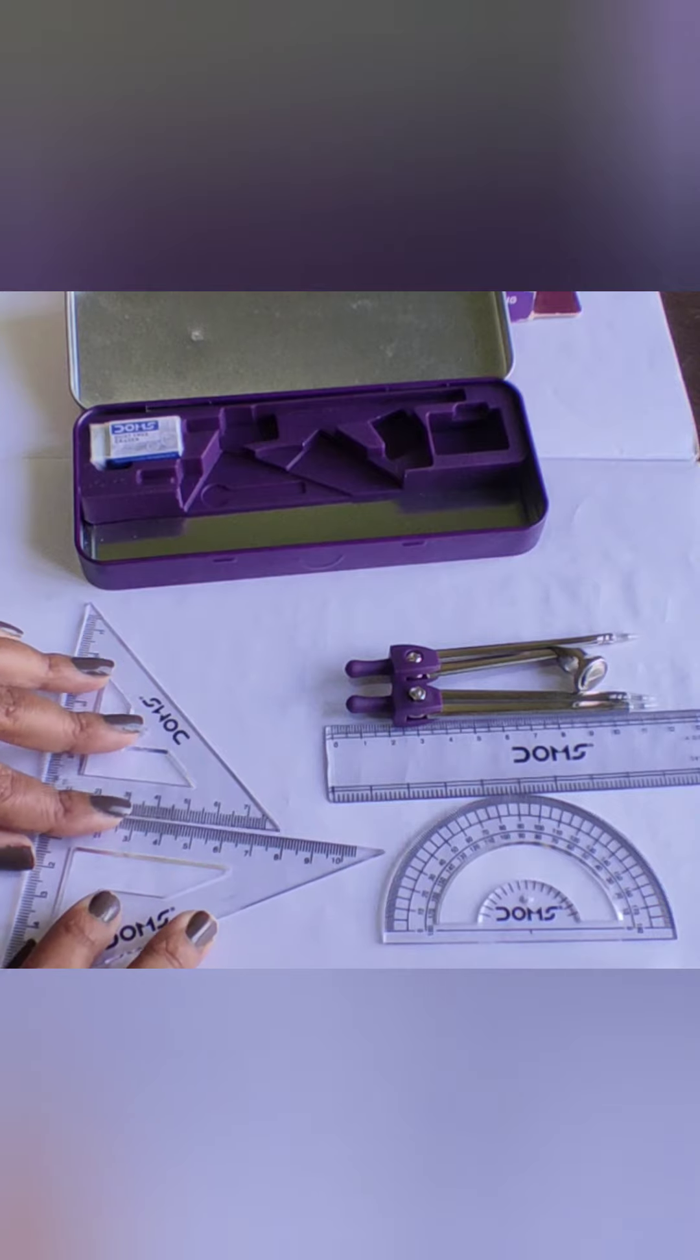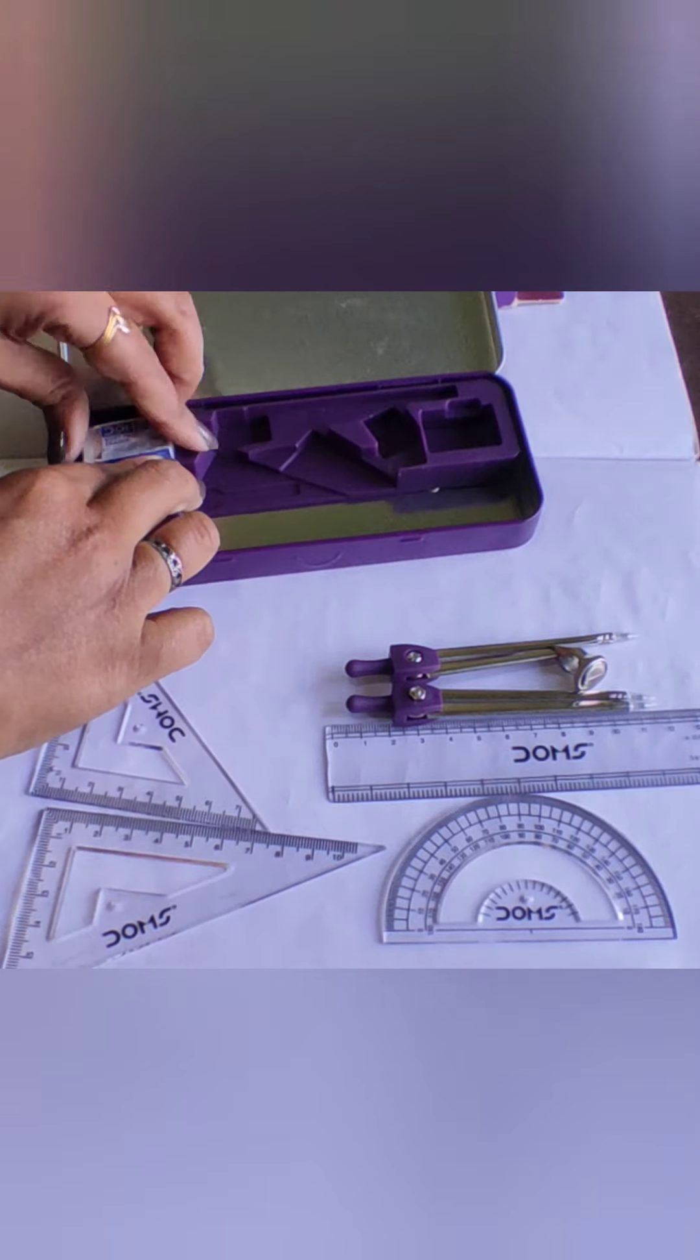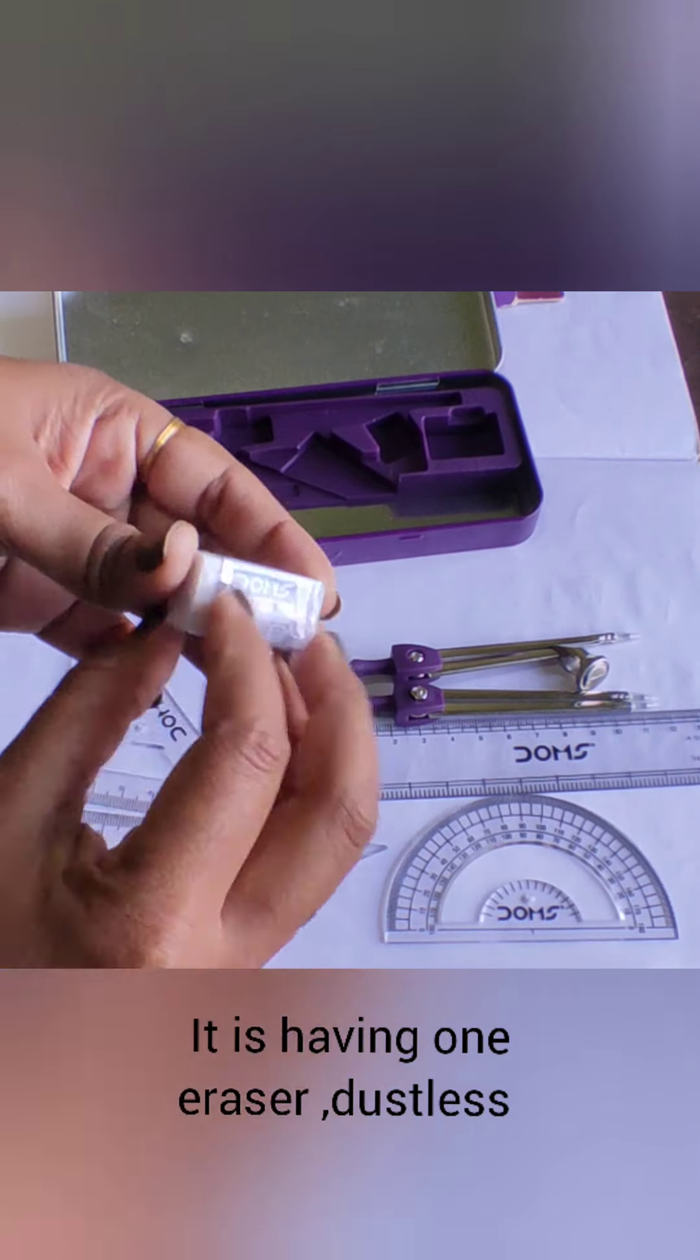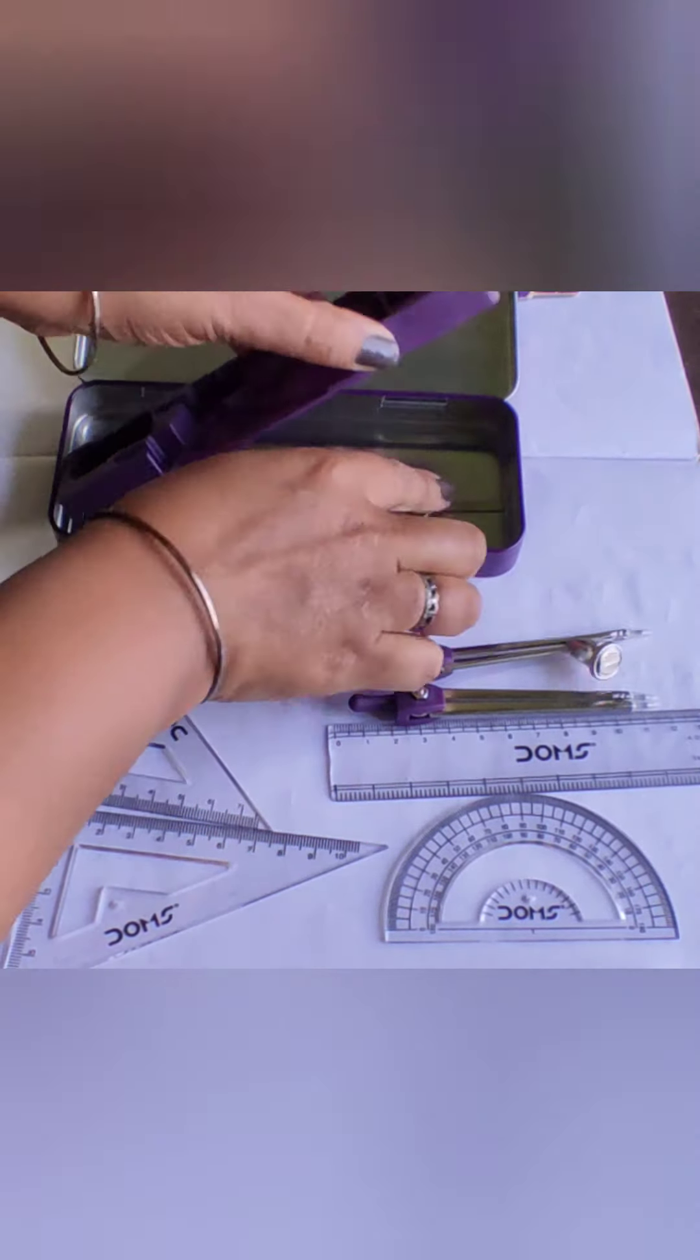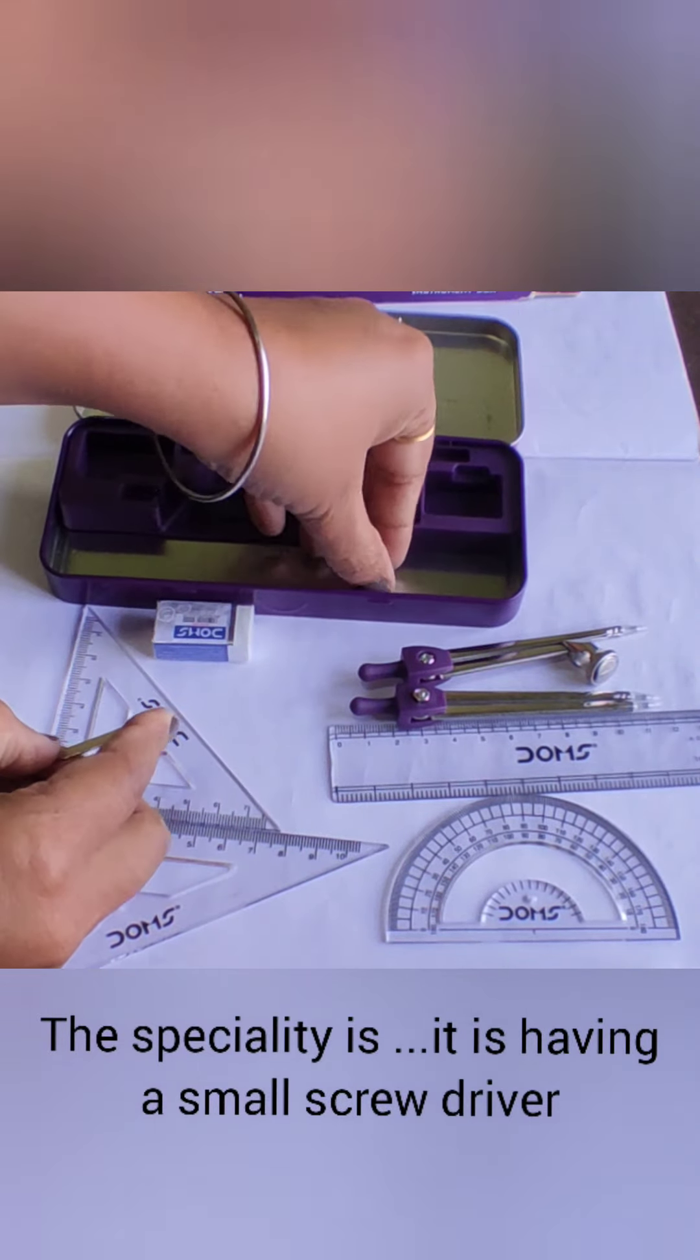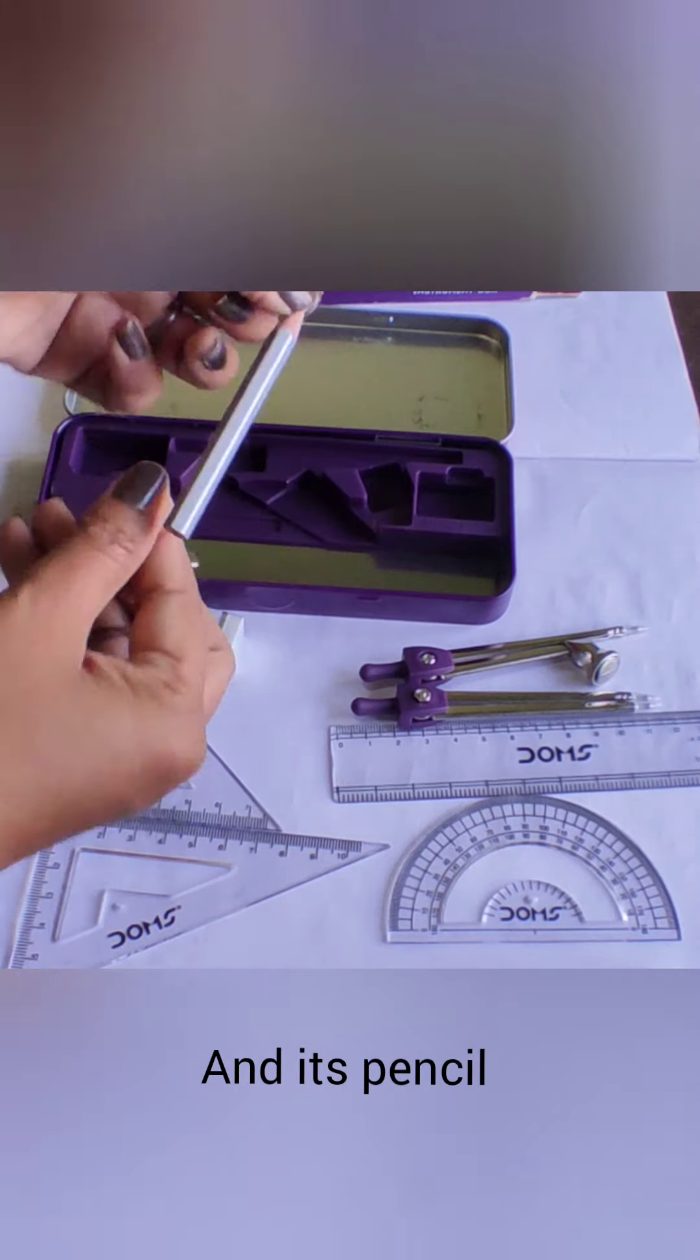Along with this, one sharpener is also given. Next, one eraser of its company is given. It is dustless. Try to avoid using eraser in geometry. Here you can see the specialty is it has a small screwdriver and pencil.